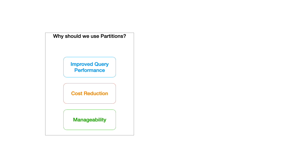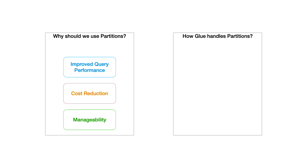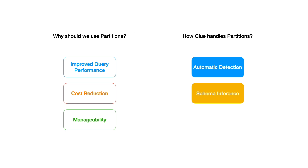AWS Glue provides robust support for table partitions. AWS Glue crawlers can automatically detect partitions in your data and update the AWS Glue data catalog accordingly. You do have the option to create these partitions manually as well, but typically the automated way is much easier. Crawlers can infer the schema of each partition, ensuring that your data is correctly structured and accessible. AWS Glue's dynamic frames, which are the core building blocks for job definitions, natively support partition data, making it easy to work with in your ETL scripts.